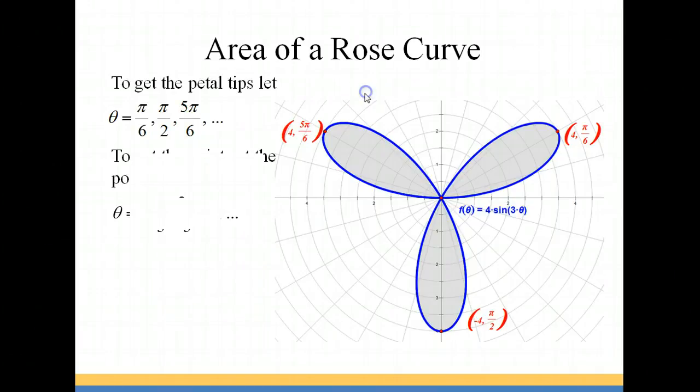Okay, so here is the same graph on our polar grid. So our petal tips are at pi over 6, pi over 2, and 5 pi over 6. So when we plug pi over 6 into our equation, we get out a 4. So that's going to give us this petal tip in quadrant 1.